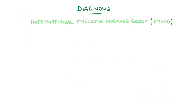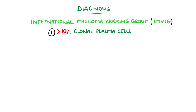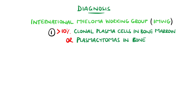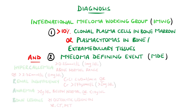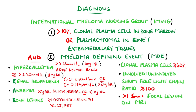A skeletal survey and bone marrow histology that meet the international myeloma working group criteria are also required. For a diagnosis of multiple myeloma, there needs to be more than 10% clonal bone marrow plasma cells or plasmacytomas, which are collections of cancerous plasma cells found on biopsy of bone or extramedullary tissue, and the presence of a myeloma-defining event. These include any of the CRAB criteria or any of these biochemical findings.